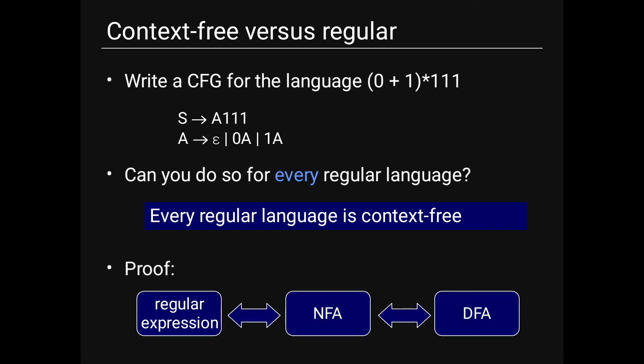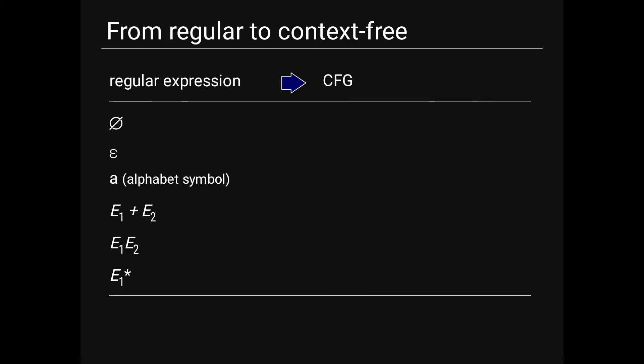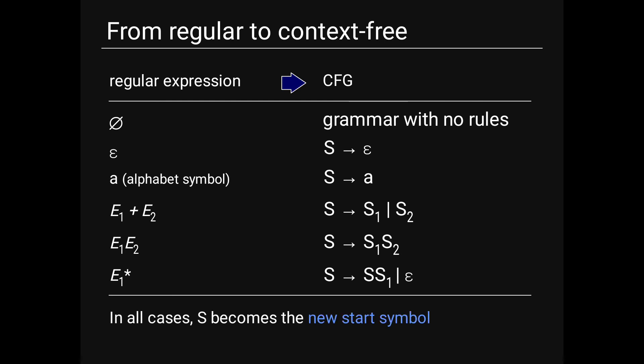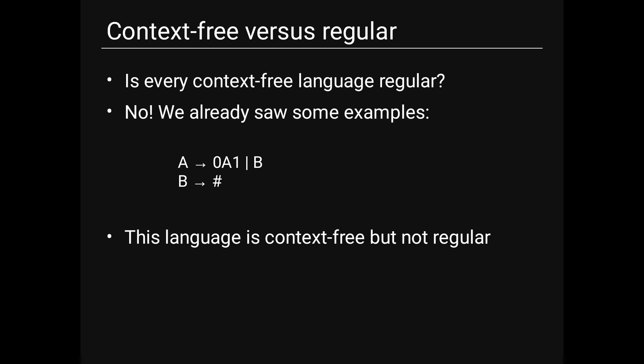To convert a regular language to a CFG: start from a regular language, convert to NFA, then to DFA, and construct equivalent productions. In all cases, S becomes the new start symbol. Is every context-free language regular? No. We already saw that A → 0A1, B → # gives a context-free language that is not regular.